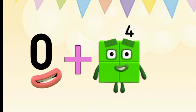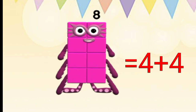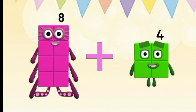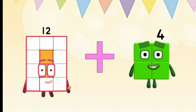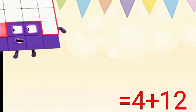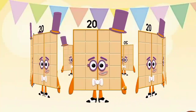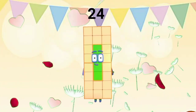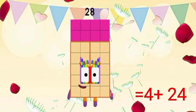Zero plus four equal to four. Four plus four equal to eight. Eight plus four equal to twelve. Twelve plus four equal to sixteen. Sixteen plus four equal to twenty. Twenty plus four equal to twenty-four.